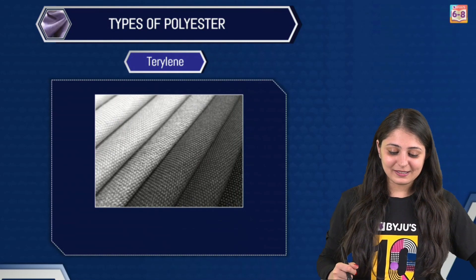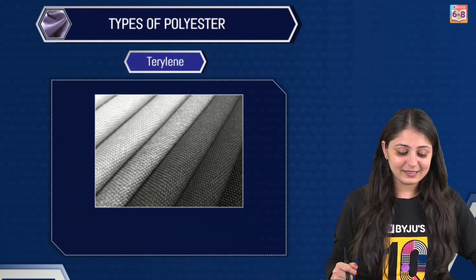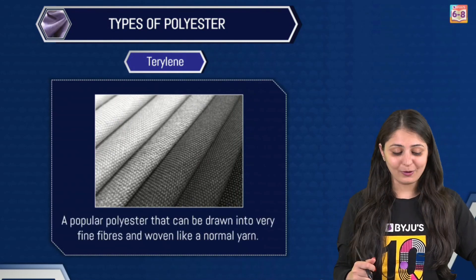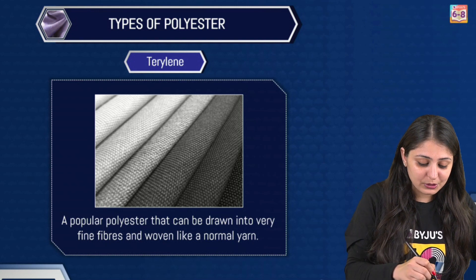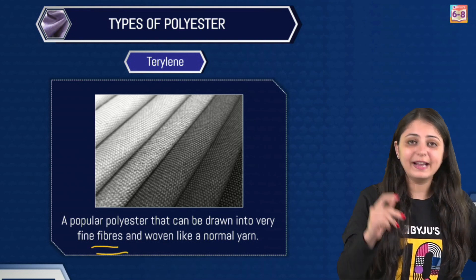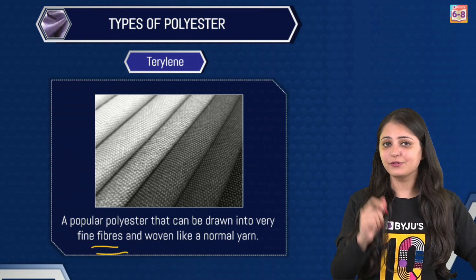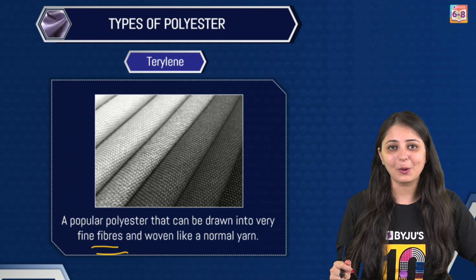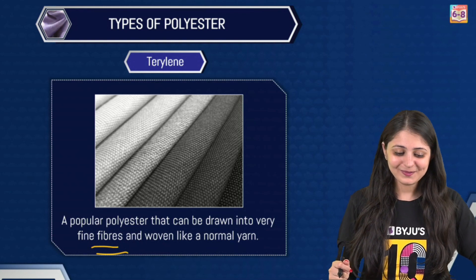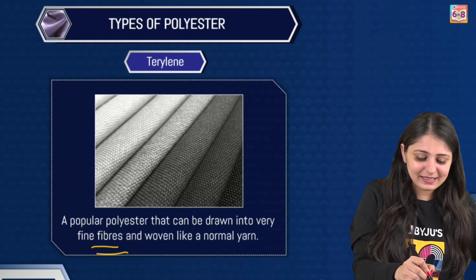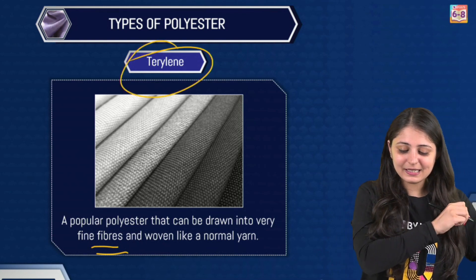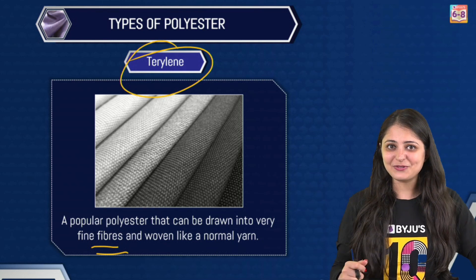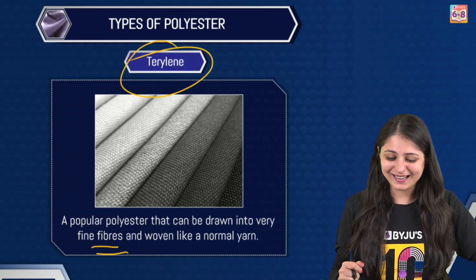Now talking about terrylene — terrylene is also a really popular polyester. It can be drawn into very fine, really thin fibres, and then woven like a normal yarn. Terrylene is basically used to make garments, sheets, and even raincoats.